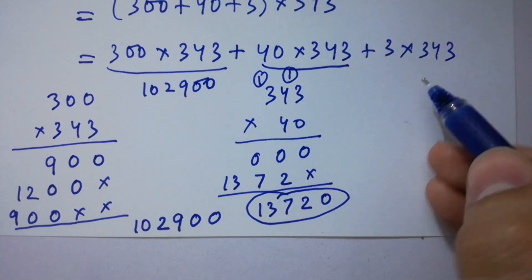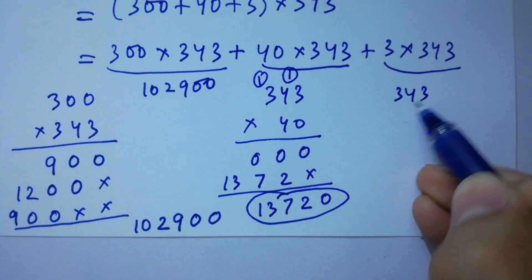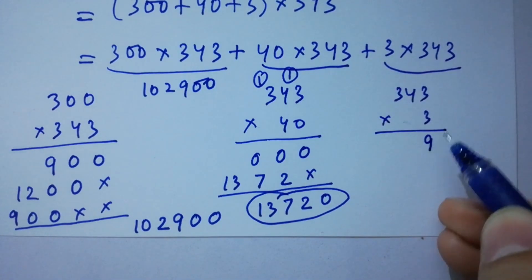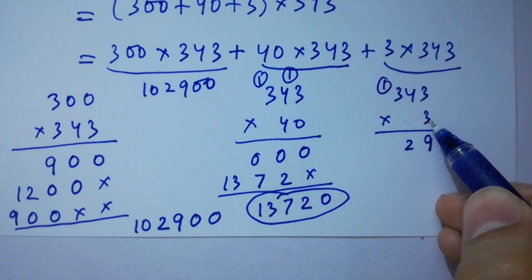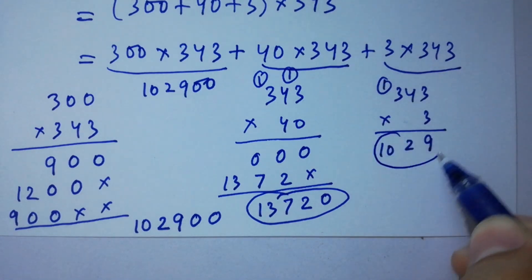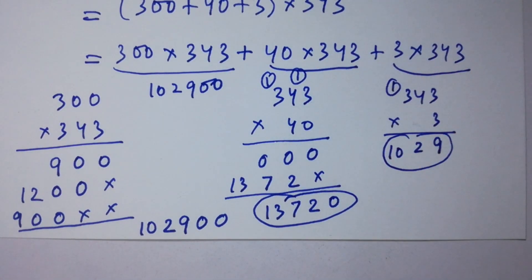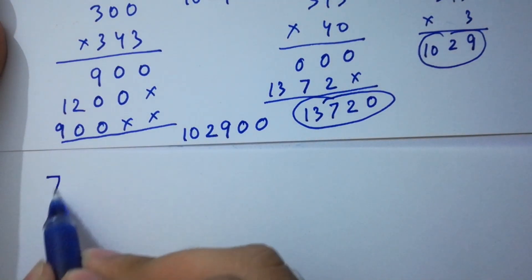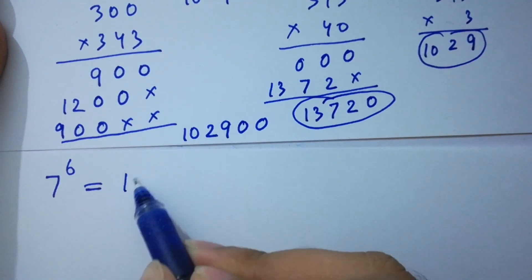Next, 3 times 343: 3 times 3 is 9; 3 times 4 is 12 — write 2, carry 1; 3 times 3 is 9 plus 1 gives 10. So 3 times 343 equals 1,029. Therefore 7 to the power 6 equals 102,900 plus 13,720 plus 1,029.